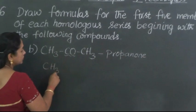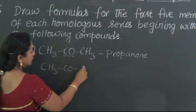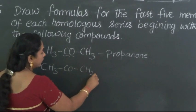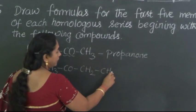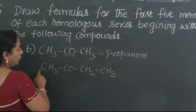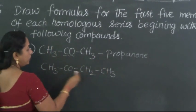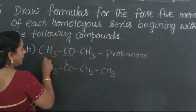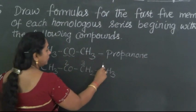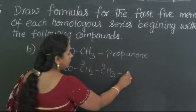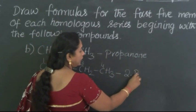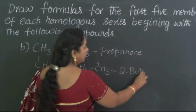So therefore the next member of this homologous series would be, after propanone, it is butanone. One, two, three, four, and for the second carbon atom the CO is there. So therefore the name of this compound would be 2-butanone.